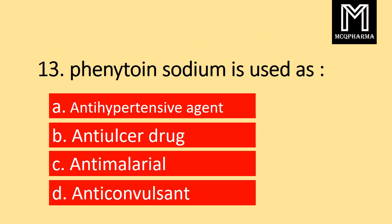Question number 13. Phenytoin sodium is used as: Option A antihypertensive agent, D antimalarial, D anticonvulsant. Correct answer: Option D anticonvulsant.